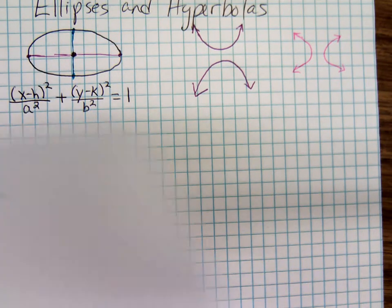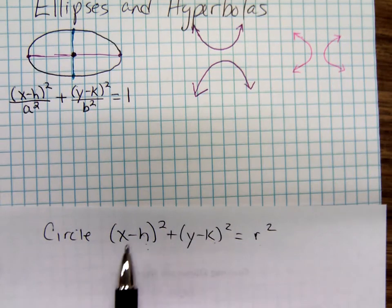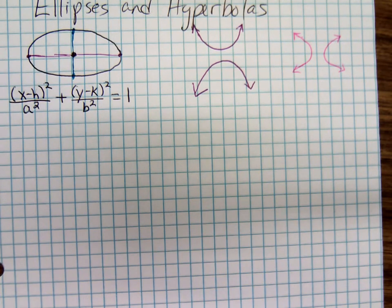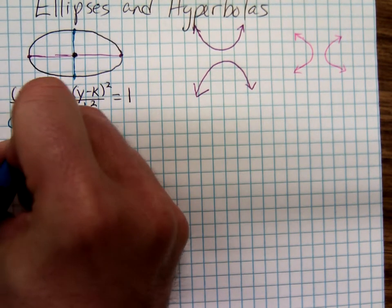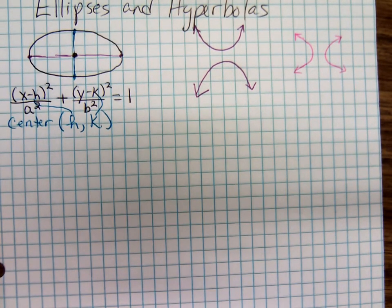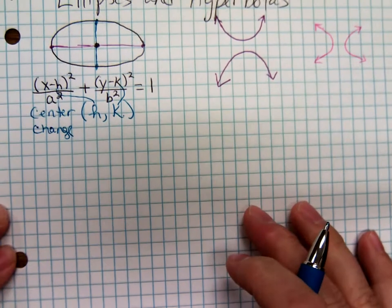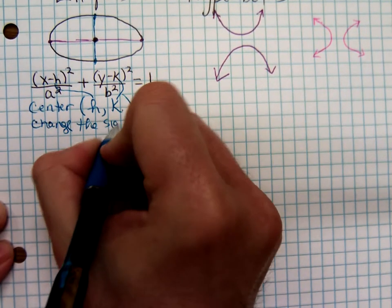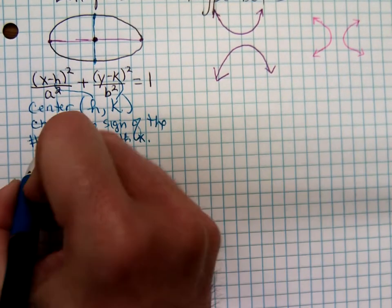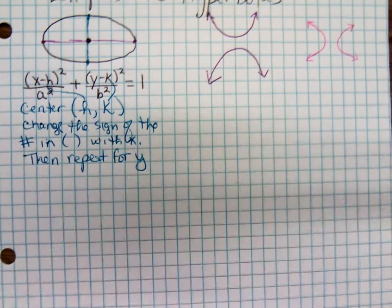So it looks sort of like the equation of a circle, except you have the fractions on the left and the number one on the right, instead of x minus h squared plus y minus k squared equals r squared. In order to graph these ellipses, you're going to state the center and find it the same way you did for circles: change the sign of the number in the parentheses with x, then change the sign of the number in the parentheses with y. That will get you the center.